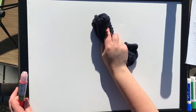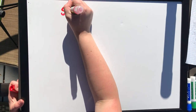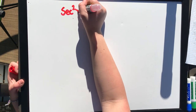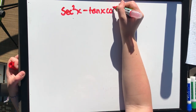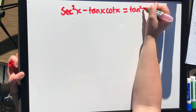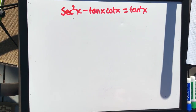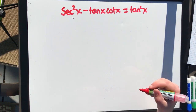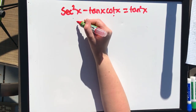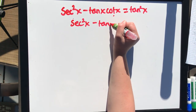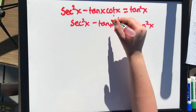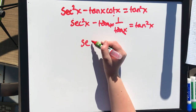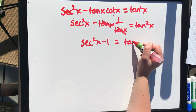Now for a slightly more difficult one: secant squared x minus tan x cotangent x equals tan squared x. This looks like a lot, but it's pretty easy. First, let's reciprocate cotangent into 1 over tan. That gives us secant squared x minus tan x times 1 over tan x equals tan squared x. Right off the bat, those cancel out, giving us secant squared x minus 1 equals tangent squared x.